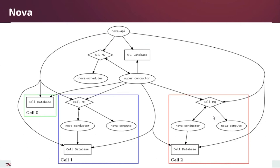For a multi-cell deployment this gets more complicated, but the general idea is the same. Each node has its own Nova Compute, Nova Conductor, and message queue as usual, but it also has its own cell database that records information about each workload. Moving up a layer, we have a superconductor and the API message queue that coordinate all communications between all the pieces.